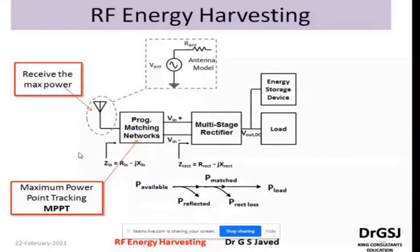The antenna can be modeled as a wire voltage source V_ant in series with R_ant, the antenna resistance. That is the antenna model we are looking at.